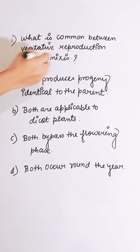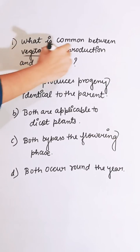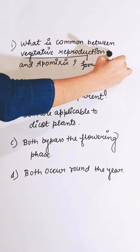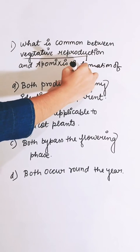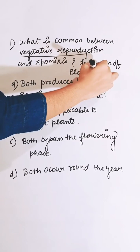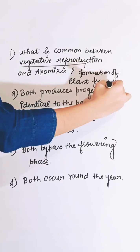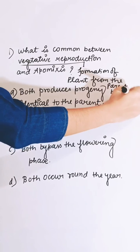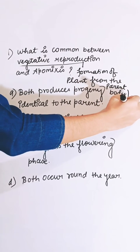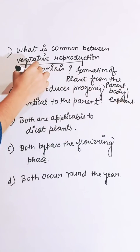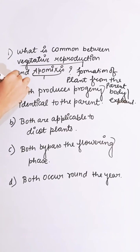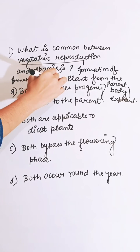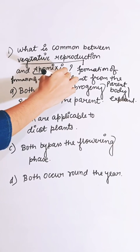What is common between vegetative reproduction and apomyxis? Vegetative reproduction means formation of a plant from the parent's body or any vegetative part. Apomyxis means formation of seed without fertilization.